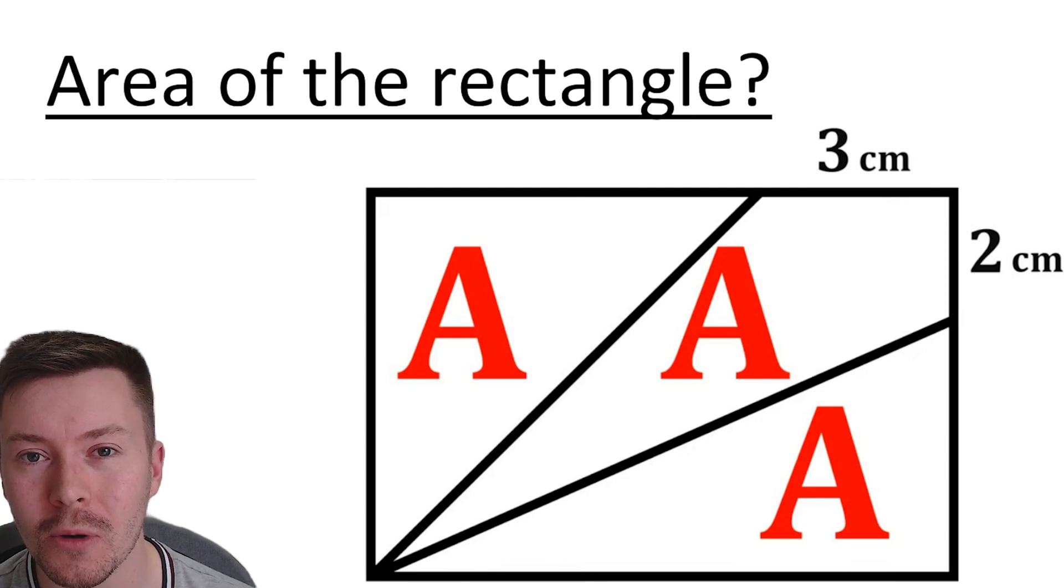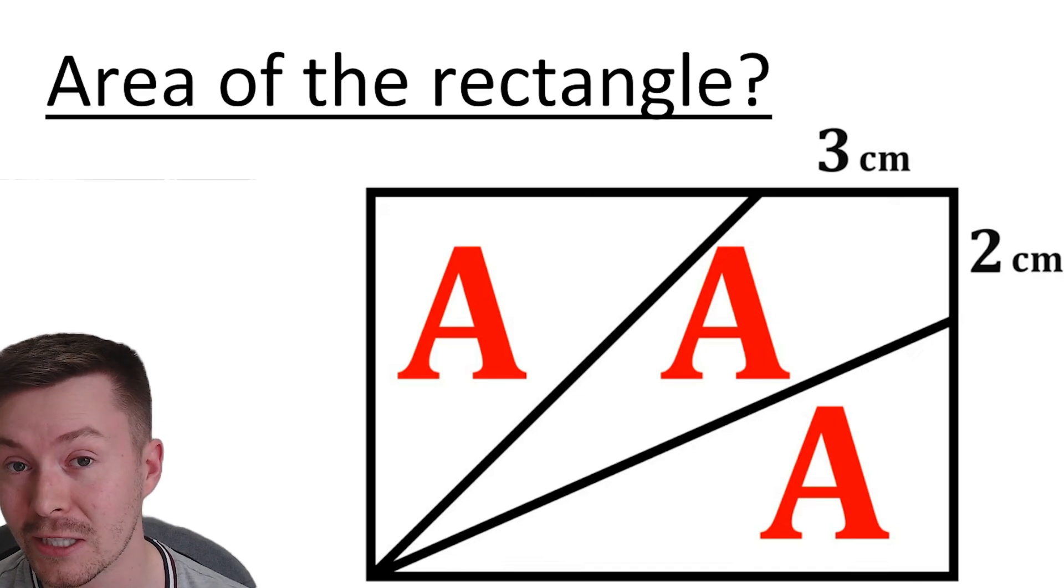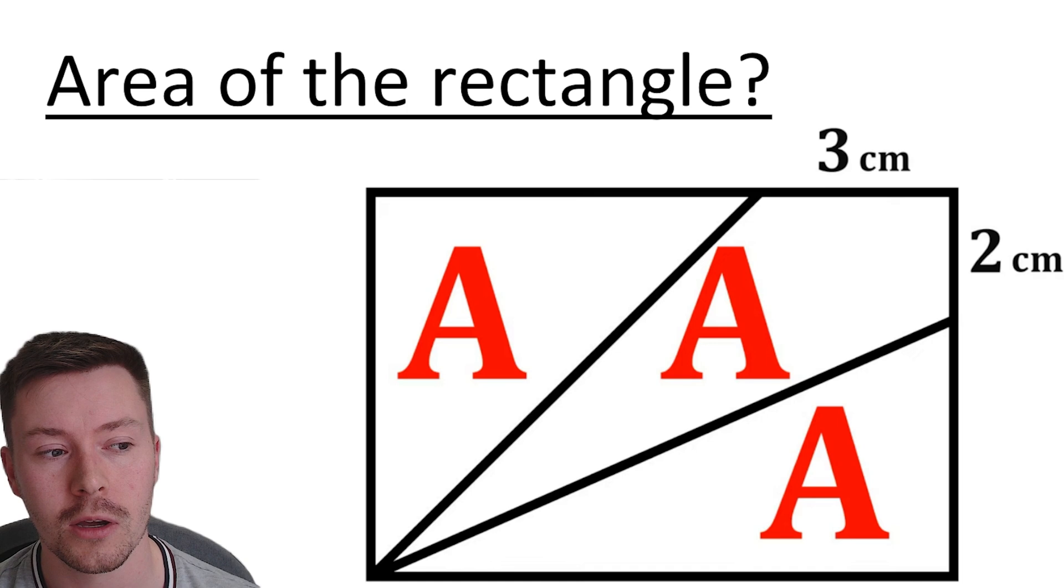Hi and welcome to my channel. This week's problem is all about finding the area of this rectangle. The rectangle has been split up with two lines from the bottom left-hand corner to the top of the rectangle and the right-hand side of the rectangle, making two triangles and one quadrilateral, and they've all got the same area A.